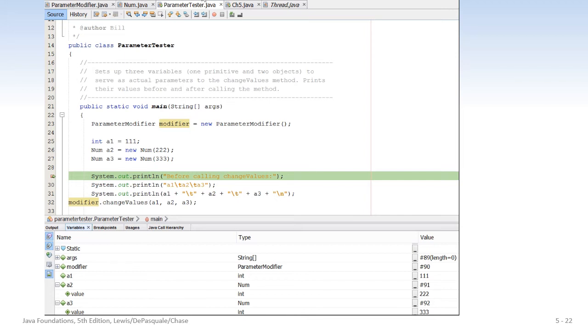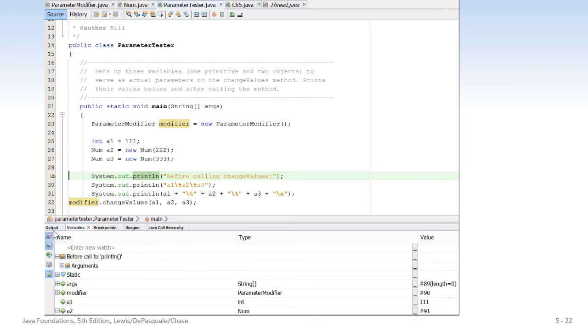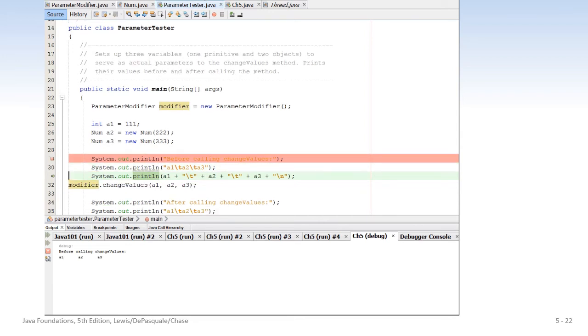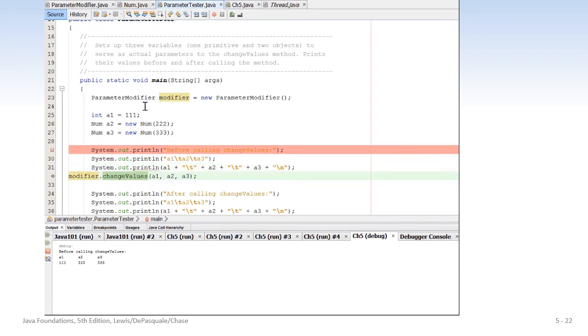So now I'm going to step over. There's the output before calling the change values. I'm going to output a header, and then I'm going to output A1, tab, A2, A3. And there they are: 111. And because A2 is a reference to this object, we'll actually call the toString method and output 222. Call the toString method output 333. So pretty straightforward so far. Now we're going to call, this modifier object is going to call change values. And we're going to pass A1, A2, and A3. So here we go.